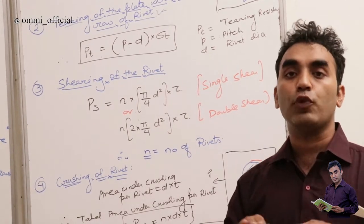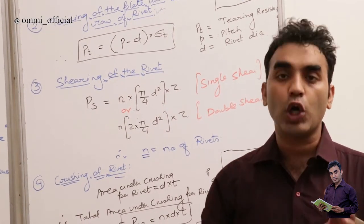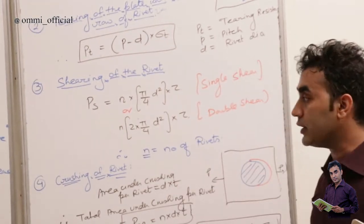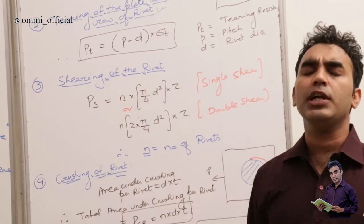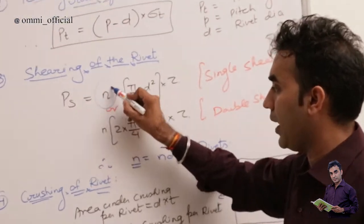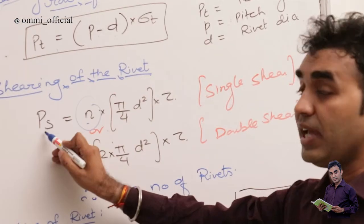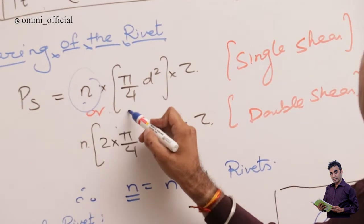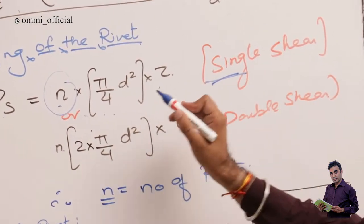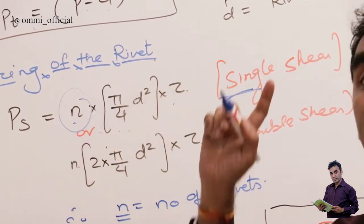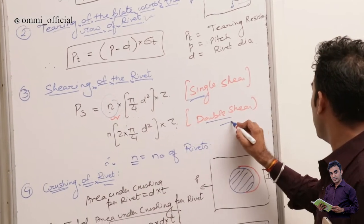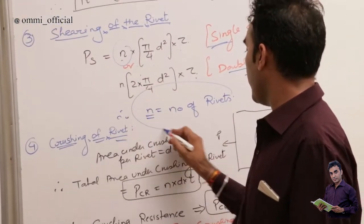Third is shearing of the rivet, which occurs across the hole. We have single shear and double shear, and the shearing force depends on the number of rivets n. For single shear: Ps = n × (π/4) × d² × τ. For double shear, the area is multiplied by two: Ps = n × 2 × (π/4) × d² × τ, where n is the number of rivets and τ is the shear stress.